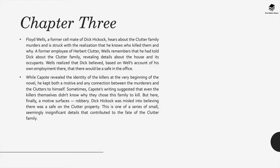Chapter 3: Floyd Wells, a former cellmate of Dick Hickok, hears about the Clutter family murders and is struck with the realization that he knows who killed them and why. A former employee of Herbert Clutter, Wells remembers that he had told Dick about the Clutter family — revealing details about the house and its occupants. Wells realized Dick believed, based on Wells' account of his own employment there, that there would be a safe in the office. Though Capote revealed the identity of the killers at the very beginning of the novel, he kept both a motive and any connection between the murderers and the Clutters hidden. But here, finally, a motive surfaces.